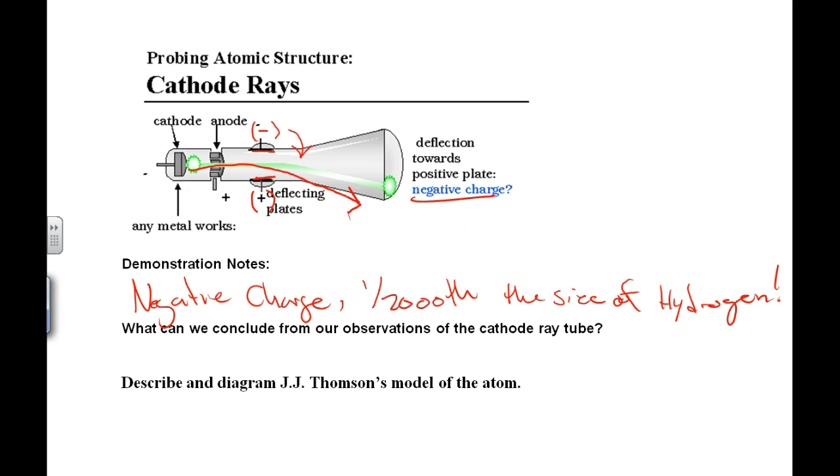Alright, now, oops, I wrote that in the wrong place. That should have been here. Your notes would just be that the beam was attracted to the positive side. About to run out of time. Alright, now, we'll start this again in just a second, because this is going to run out of time.